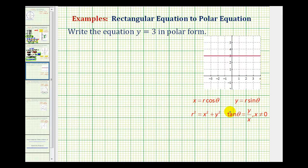To write the polar equation, we'll use these equations here that relate polar and rectangular coordinates. So to write the polar equation for y equals 3, we want to perform a substitution for y in terms of r and theta.